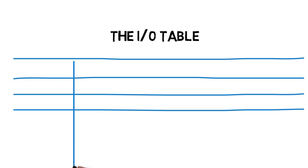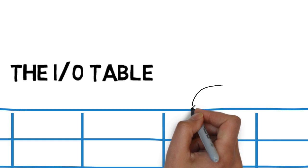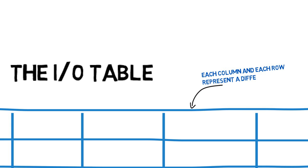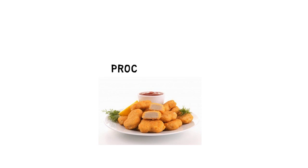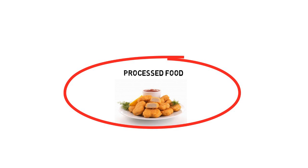You must imagine a matrix, a grid of rows and columns. Each column and each row represent a different industry. Let's pick one industry, say processed food, and look along its row.